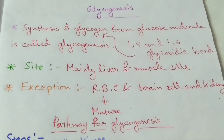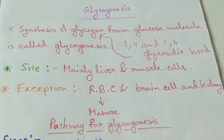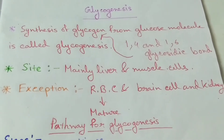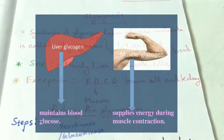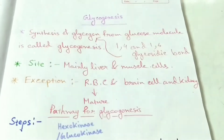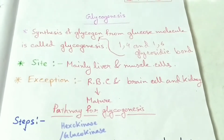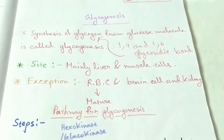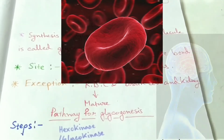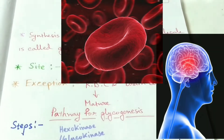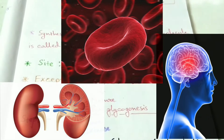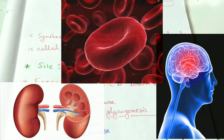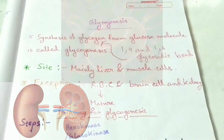The main site of glycogenesis pathway occurs mainly in the liver and in the muscle cells. The glycogenesis pathway does not take part in the mature RBC and brain cells and the kidneys.